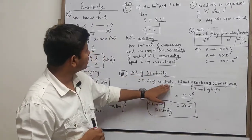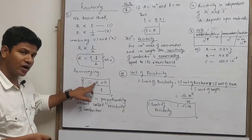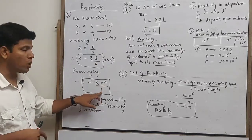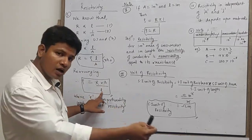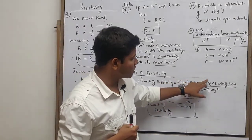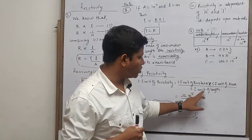Unit of resistivity. So unit of resistivity will be nothing but unit of resistance into unit of area of cross section upon unit of length. SI unit of resistance, SI unit of area of cross section upon SI unit of length.